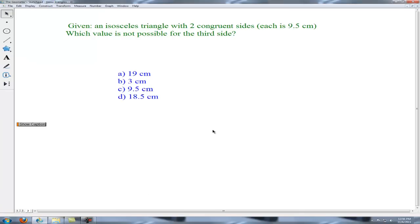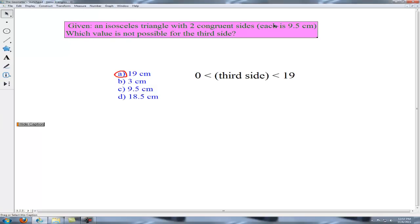So how about one more problem? Given an isosceles triangle with two congruent sides, each 9.5, which value is not possible? And our correct answer is, that's right, 19 is not possible. The third side must be less than the sum and greater than the difference of the two given sides.